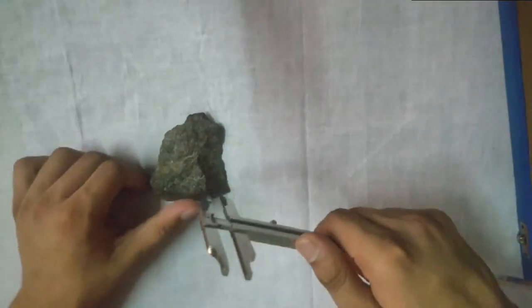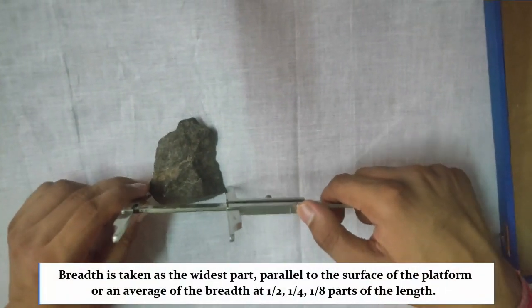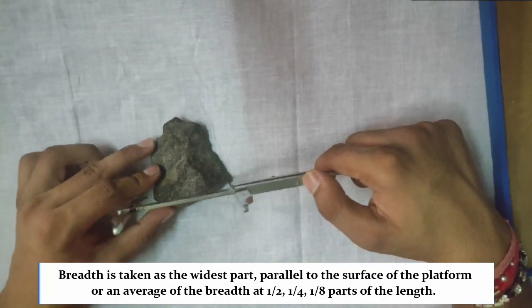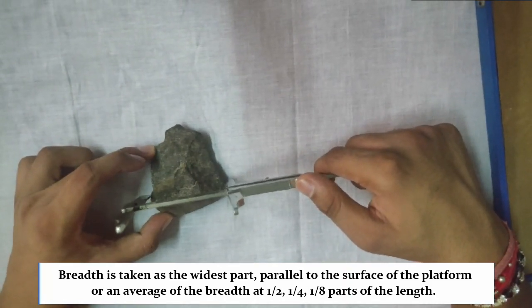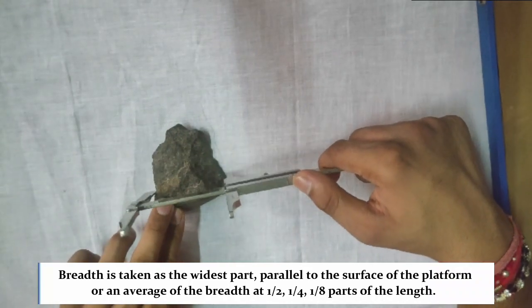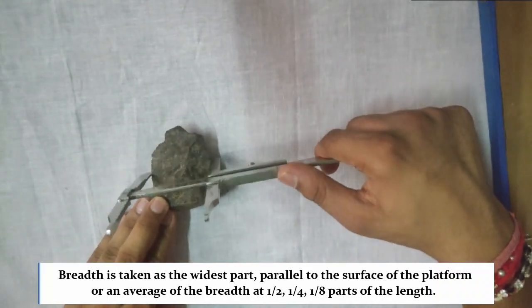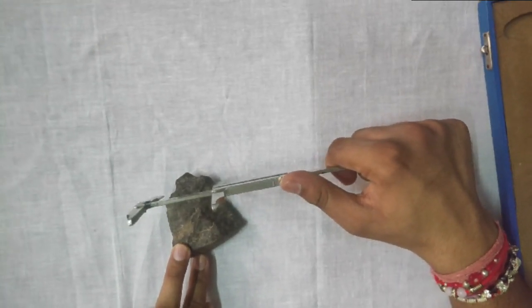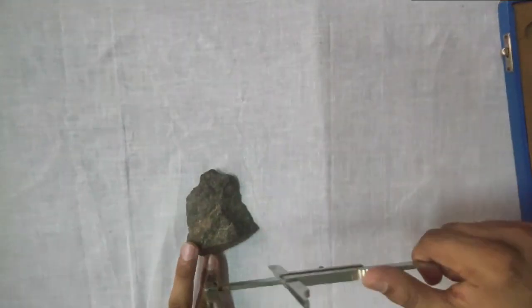Now to measure the breadth of the stone tool, you can either take the widest portion parallel to the surface of the platform or you can take an average of the values taken at one-fourth, half and one-eighth parts of the length of the stone tool.